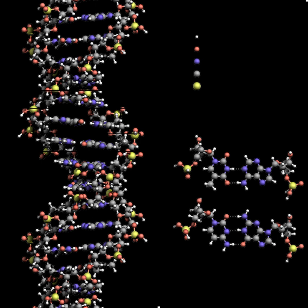DNA can be twisted like a rope in a process called DNA supercoiling. With DNA in its 'relaxed' state, a strand usually circles the axis of the double helix once every 10.4 base pairs. If the DNA is twisted in the direction of the helix, this is positive supercoiling and the bases are held more tightly together. If twisted in the opposite direction, this is negative supercoiling and the bases come apart more easily. In nature, most DNA has slight negative supercoiling introduced by enzymes called topoisomerases, which also relieve twisting stresses during transcription and DNA replication.